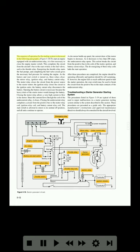The sequence of operation for the starting system is as follows. To start an engine equipped with an undercurrent relay, it is first necessary to close the engine master switch. This completes the circuit from the aircraft's bus to the start switch, to the fuel valves, and to the throttle relay. Energizing the throttle relay starts the fuel pumps, and completing the fuel valve circuit gives the necessary fuel pressure for starting the engine. As the battery and start switch is turned on, three relays close: the motor relay, ignition relay, and battery cutout relay. The motor relay closes the circuit from the power source to the starter motor. The ignition relay closes the circuit to the ignition units. The battery cutout relay disconnects the battery.